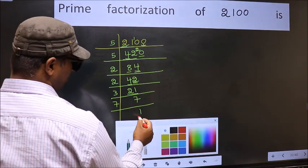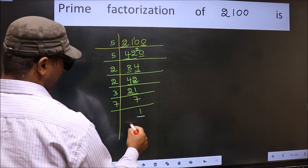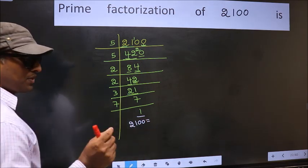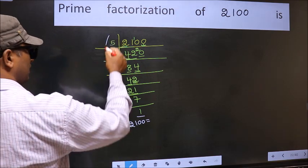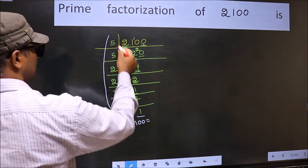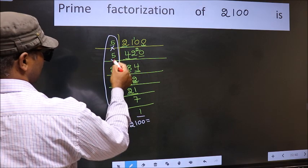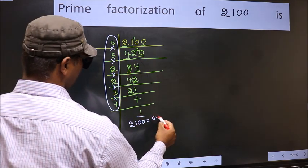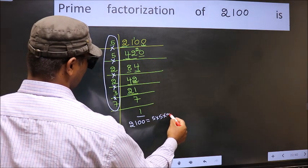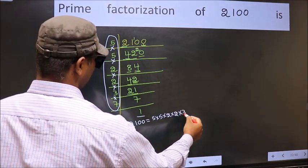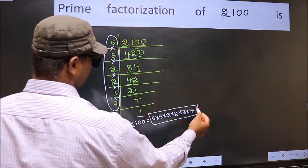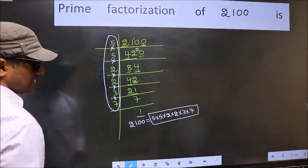So we got 1 here. The prime factorization of 2100 is the product of these numbers: 5×5×2×2×2×3×7. This is the prime factorization of 2100.